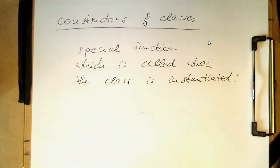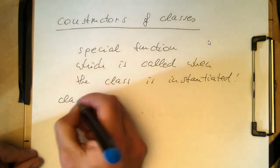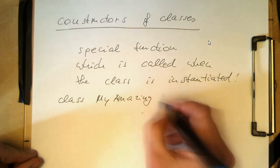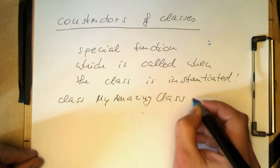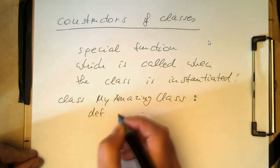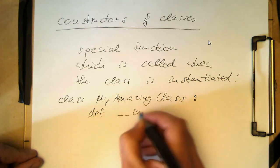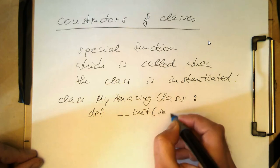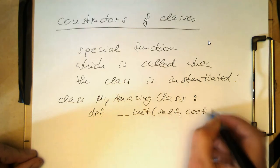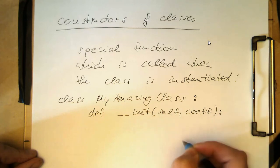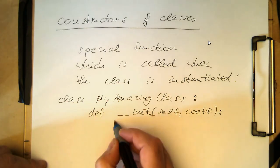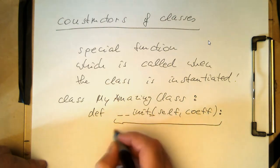The definition of the constructor is as follows. If we have 'class my amazing class' with a colon, we now define a special function: 'def __init__' — with two underscores before and after 'init' — and then 'self' comma and let's say 'coefficient'. There are two underscores on each side. So this 'init' defines our constructor function.